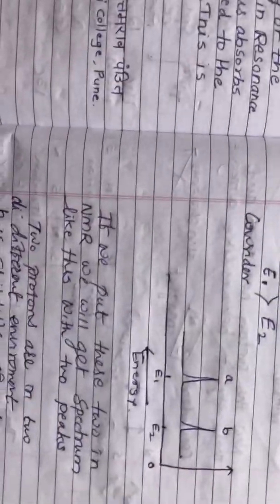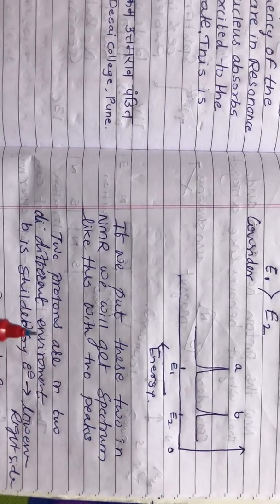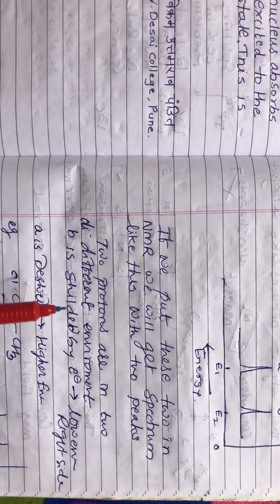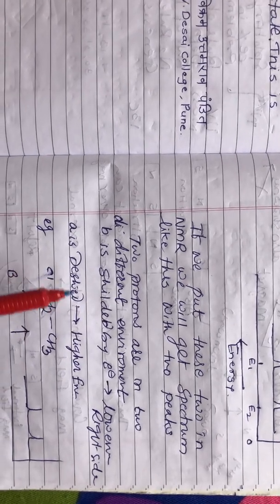If we put these two magnets in NMR, we will get a spectrum like this. Two protons are in two different environments. B is shielded by the electrons and the other is deshielded.